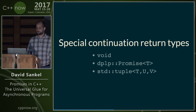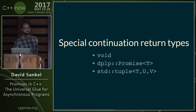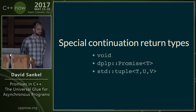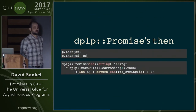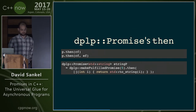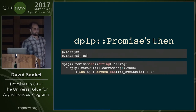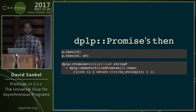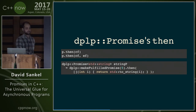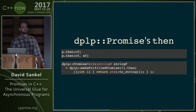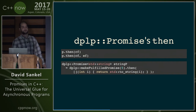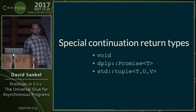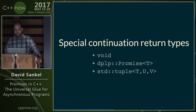Question: is there a way to attach only an error continuation without a fulfilled continuation? You can implement that with this interface by making the fulfilled continuation the identity function. That might be a nice shorthand but it's not strictly necessary. The continuations have some special return types handled in a special way that we'll look at in turn.